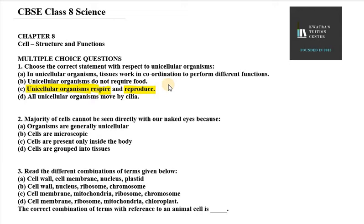Let's check option D: all unicellular organisms move by cilia. This is wrong because unicellular organisms can move by various means, not only cilia. Moving on, question two: the majority of cells cannot be seen directly with our naked eyes because cells are microscopic — meaning they are very minute and small, so we cannot see them.